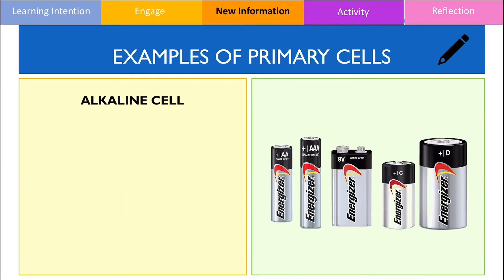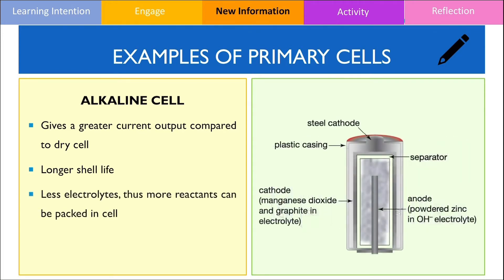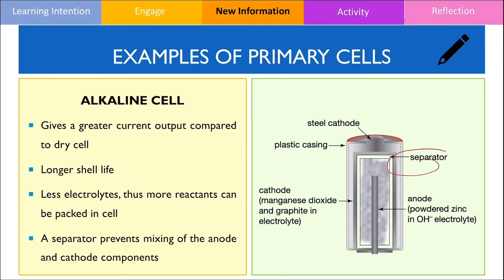Alkaline cells are the batteries we commonly use and find in supermarkets. They are better compared to dry cells because they provide more electrical current and have a longer shelf life. The reason why they are better is because they contain less electrolyte, which means they can hold more reactants inside the battery to take part in the reaction. Unlike a dry cell which contains a dry paste, an alkaline cell has a separator, which is a thin material that prevents the mixing of the anode and cathode components.